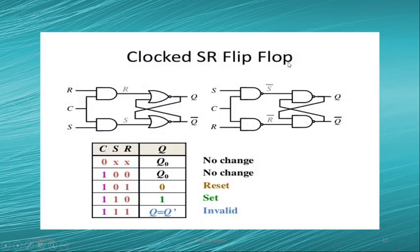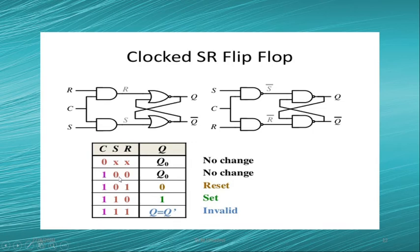Next, clocked SR flip-flop. The clocked SR flip-flop is constructed using 2 AND gates and 2 NOR gates, with R, S as inputs, clock pulse, and Q, Q-bar as outputs. The same clocked SR flip-flop can also be constructed using NAND gates. Truth table: when clock C=0 (low), S and R are don't-care — no change. When C=1, S=0, R=0 — no change (Q₀). When C=1, S=0, R=1 — reset. When C=1, S=1, R=0 — set, output is 1. When C=1, S=1, R=1 — Q=Q-bar, invalid.